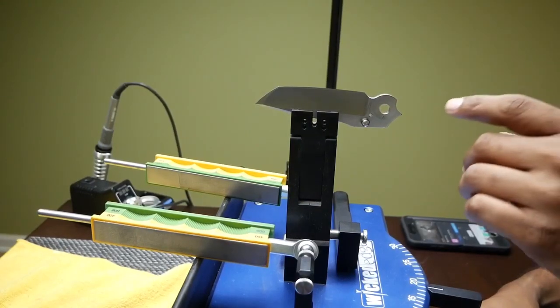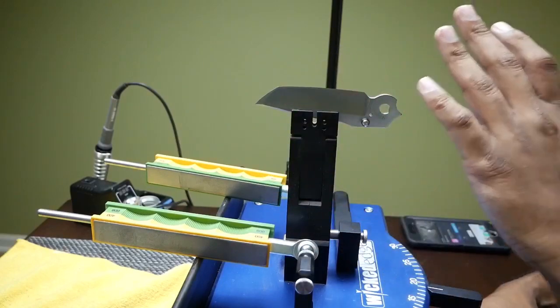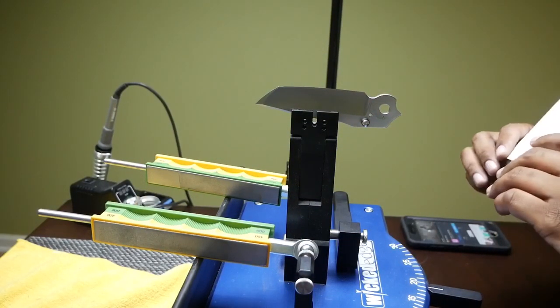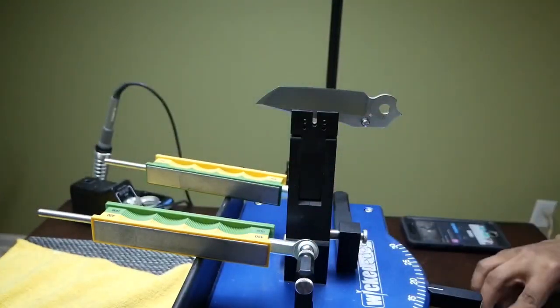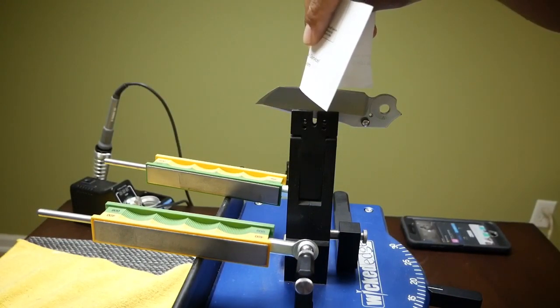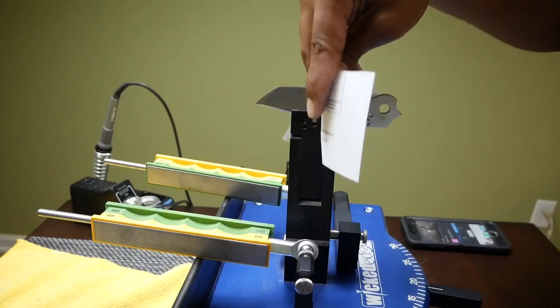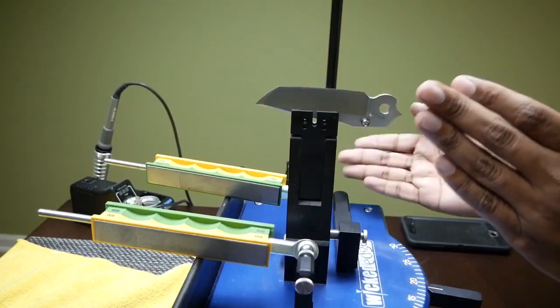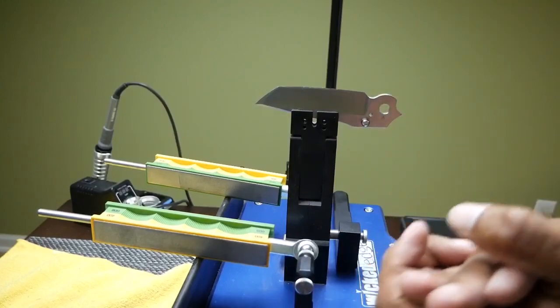All right. I finished with the 600. I've apexed the edge. I've removed the burr. And this is currently where we're at with the sharpness. So as you can see, it'll slice cut very easily. And it'll even push cut easily. So the burr has been removed. The knife is very sharp.